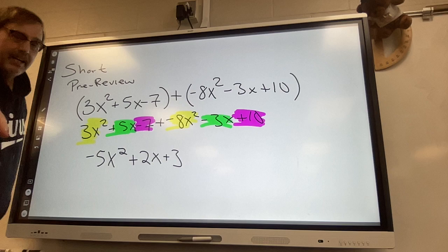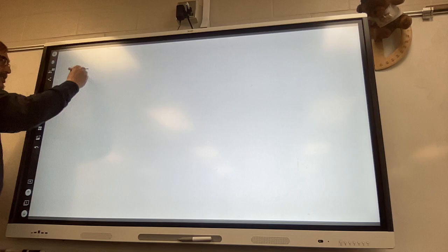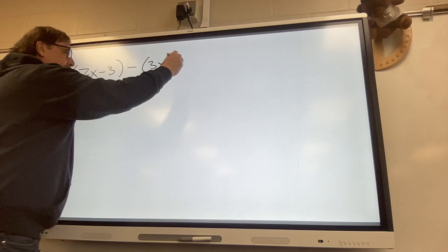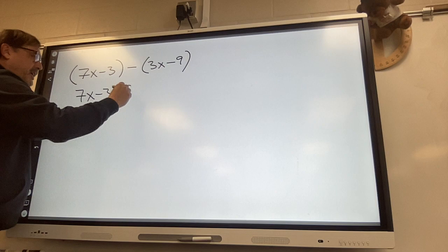All right. Just short pre-review. All right. Then when we subtracted polynomials what happened and we're going to do just a small subtraction of polynomials. To subtract polynomials the first one with nothing in front of it we write it down untouched and then the negative goes times the three make it negative three.